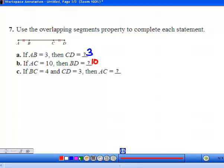Part C says if BC is 4, so this center piece is 4, and CD is 3, what is the length of AC? We're missing this piece, but we have two tick marks meaning this is also 3. So AC would be 3 plus 4, which is 7. You can also be given line segments with algebraic expressions rather than just numbers.